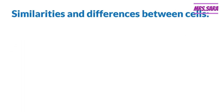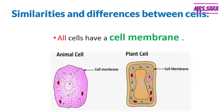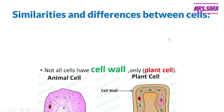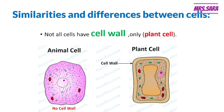We have similarities and differences between cells, Primary 6. As you can see here, all cells have a cell membrane — so that is a similarity. This is the cell membrane of the Animal Cell, and this is the Plant Cell membrane. Also, not all cells have a cell wall. Only plant cells have the cell wall. You cannot find the cell wall in the Animal Cell — so Animal Cells have no cell wall.